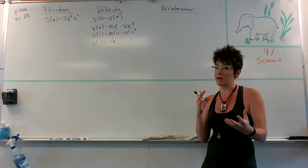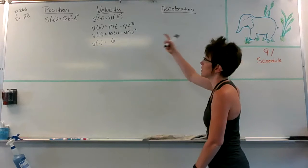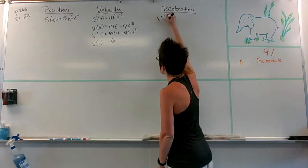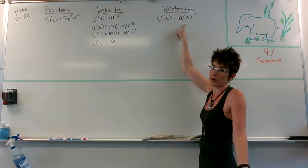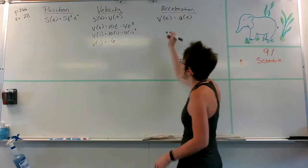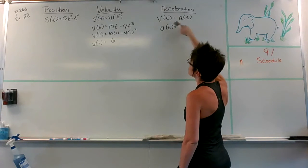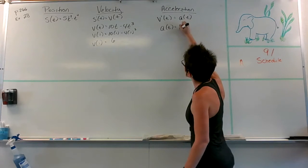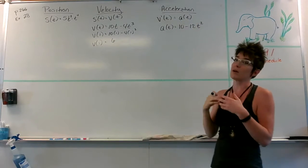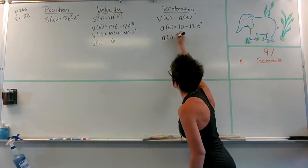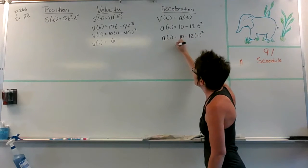I want to know how quickly my velocity is changing — that's acceleration. I take the derivative of my velocity function, which gives me a of t. Notice it's v prime, but then a straight a of t for acceleration after time. My acceleration function is the derivative of my velocity, which looks like 10 minus 12t squared. Plugging in one for t gives me 10 minus 12 times one squared, which is essentially negative two.